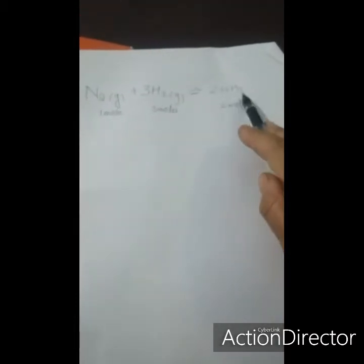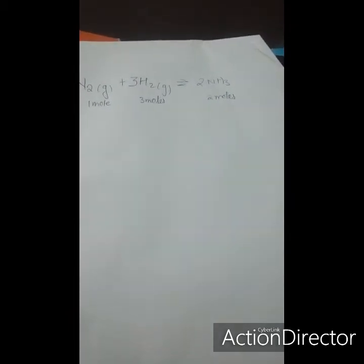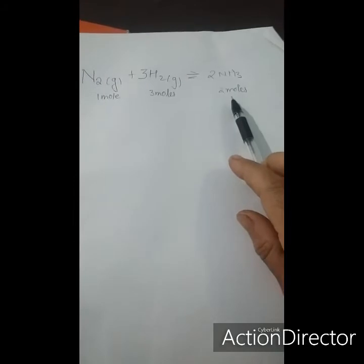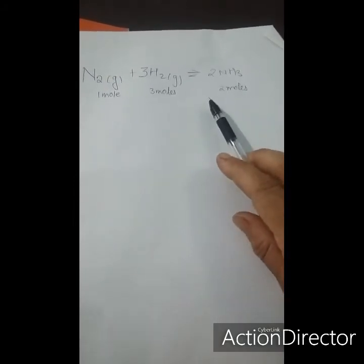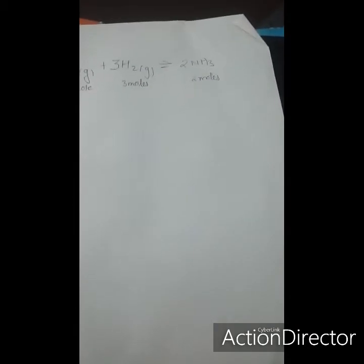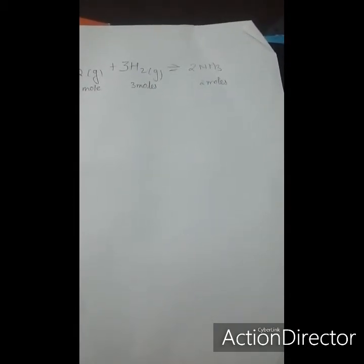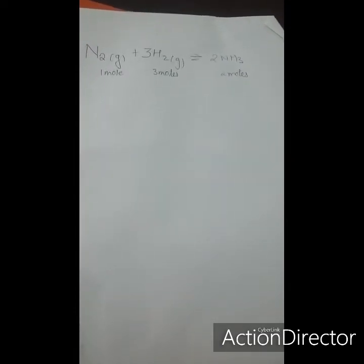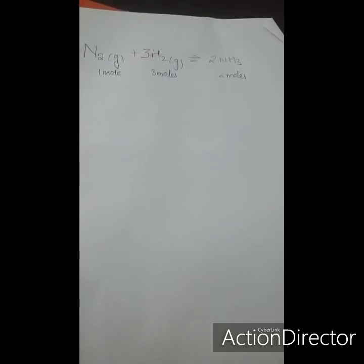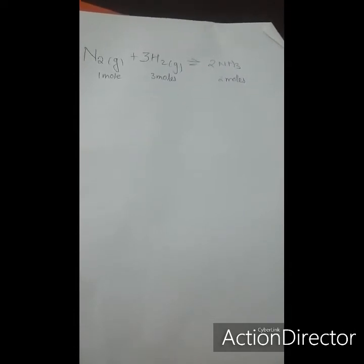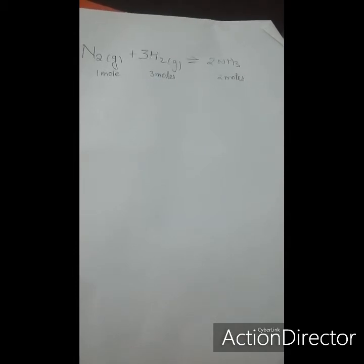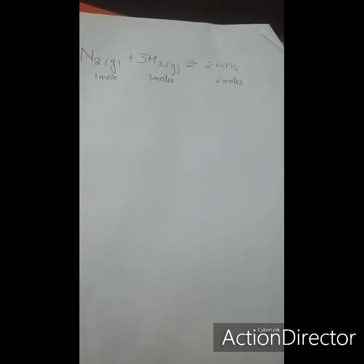We can explain this using the example of formation of ammonia. As is evident from the equation, the forward reaction is accompanied by a decrease in the number of moles — four moles on the reactant side and two moles on the product side. If the pressure is increased, the volume will decrease and the number of moles per unit volume will increase. According to Le Chatelier's principle, the equilibrium will shift in the direction of decrease in moles, favoring formation of ammonia. Therefore, a pressure of about 200 atmospheres is maintained in the Haber process.